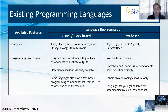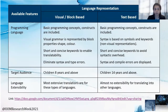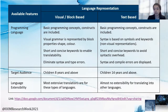Visual languages usually have drag-and-drop interfaces with large graphical components. In comparison, text-based languages do not have these specific interfaces and focus more on providing direct coding exposure. In terms of the programming language, both representations provide basic programming concepts and constructs. The visual grammar is usually represented by blocks of different shapes and colors, with short and concise keywords to enable translatability and to eliminate syntax overhead. Text-based languages have syntax based on symbols and keywords, also with short and concise keywords to avoid syntax overhead.